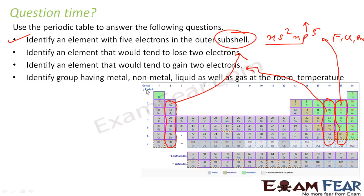The group having metals, non-metals, metalloids, liquid as well as gas at room temperature is Group 17. Group 17 contains non-metals, metalloids, gases, and bromine which is liquid at room temperature. By looking at the periodic table, we can talk about the properties of these elements.